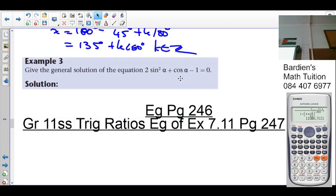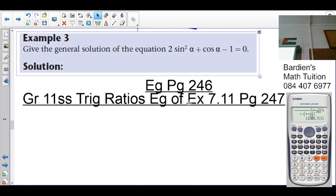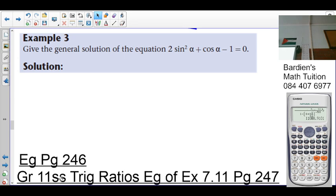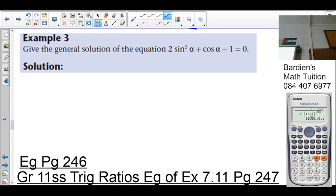This is example 3. Example 3 now uses something different. Here we have quadratic equations. So as you can see here, here's the general solution of the equation: 2 sin²α + cos α - 1 = 0. So from there you can see a trinomial. Not so? However, it must all be the same trigonometric ratio.